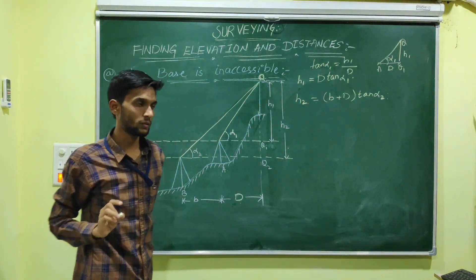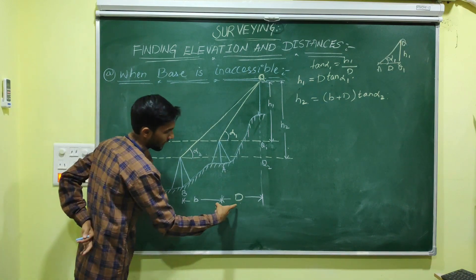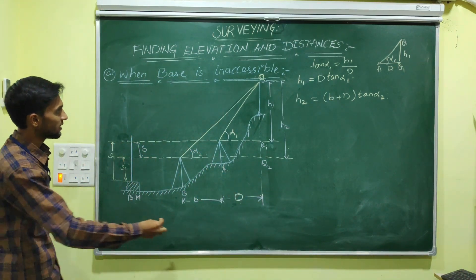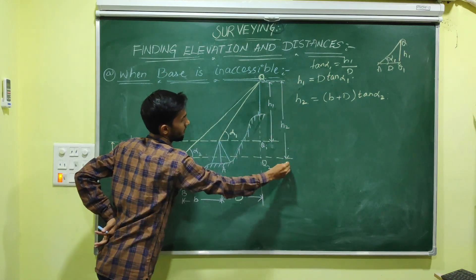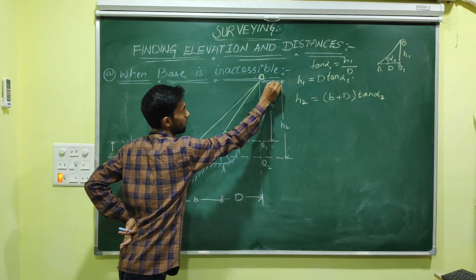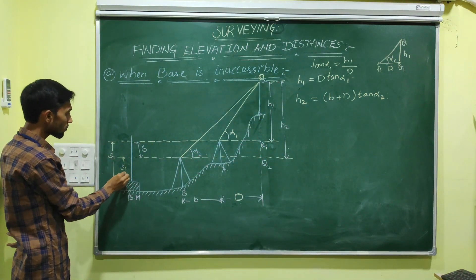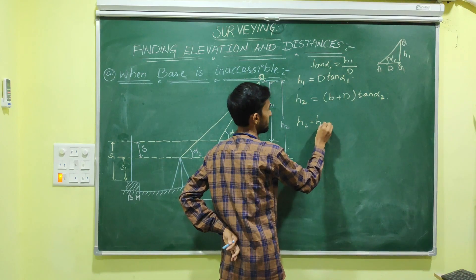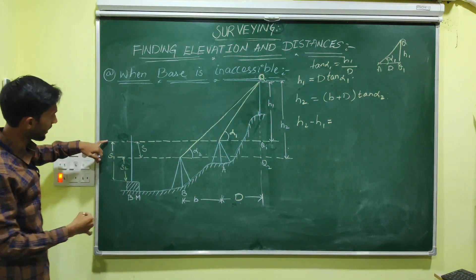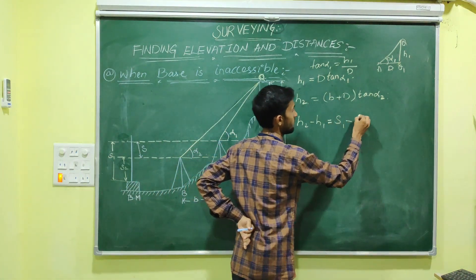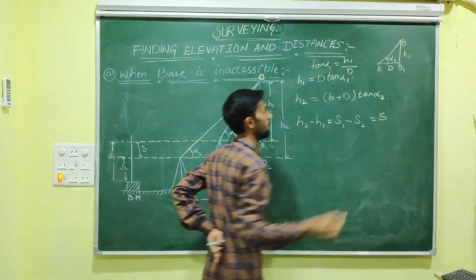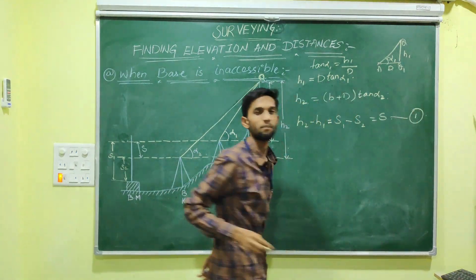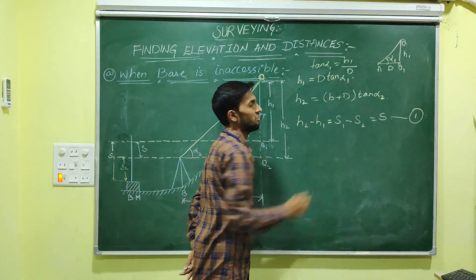We have H1 and H2. The main goal is to find capital D. To calculate it, consider the difference between H2 and H1. H1 minus H2 equals S, because H1 is the higher value. Substituting the expressions for H1 and H2 into this equation gives us D.